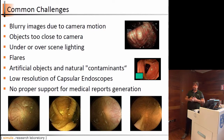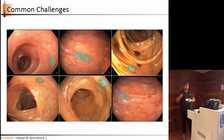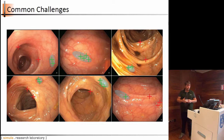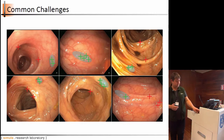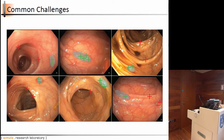There is no support for report generation in existing systems. Here is an example of how challenging it is to spot these things: this is a polyp area, and as you can see there is not much difference from the surrounding tissue. It's very hard to detect whether it's normal tissue or a polyp that should be removed.